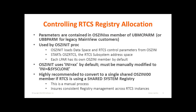Parameters which control the allocation and sharing of the RTCS registry, as well as which systems can be eligible owners, are controlled by the OSZAnyXX parameter member. This member is located in the UBMC PARM library for new customers, but it may be in the UBB PARM library for legacy customers. OZ sets up an OSZAnyXX member for each LPAR with a suffix of its sysclone value.